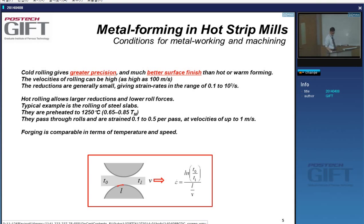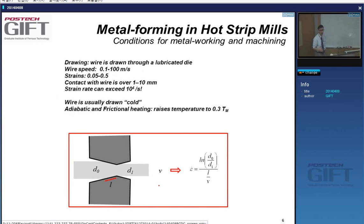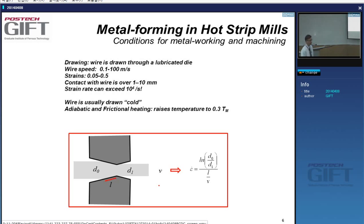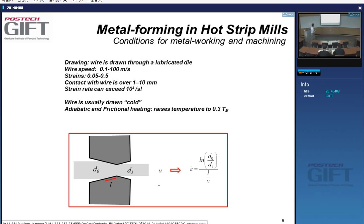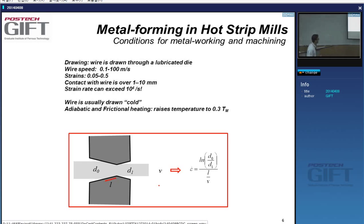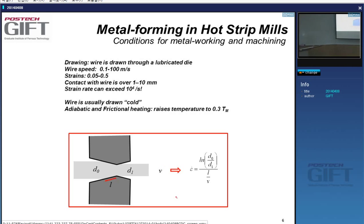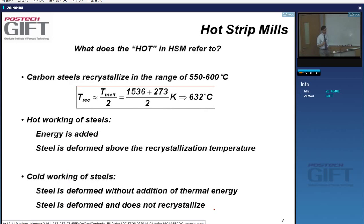In wire drawing, this is a cold roll process, but because of very high strain rates and very high friction between the die and the material being deformed, temperature rise can be very high — about a third of the melting temperature in Kelvin. Where's the line between hot and cold? Carbon steel recrystallizes at a temperature about half the melting temperature in Kelvin, which corresponds to 630°C.